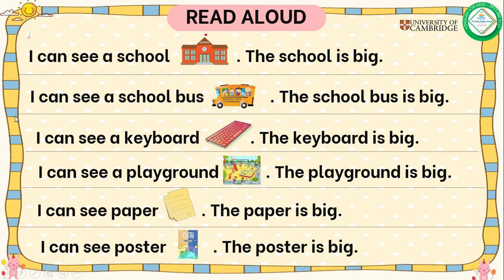Now listen and read aloud. I can see a school — the school is big. I can see a school bus — the school bus is big. I can see a keyboard — the keyboard is big. I can see a playground — the playground is big. I can see paper — the paper is big. I can see a poster — the poster is big.